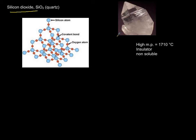It has a very high melting point of 1710°C—definitely less than half of diamond and graphite, but still extremely high. It's an insulator; as an example, glass does not conduct electricity.